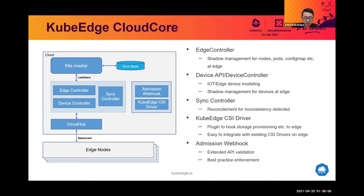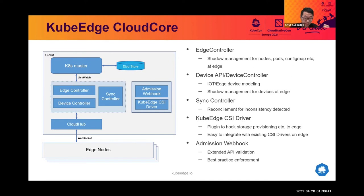The KubeEdge CSI driver is a plug-in to hook storage provisioning requests to the edge, making it easy to integrate with existing CSI drivers and backends running on edge. The admission webhooks are responsible for extended API validation and provide best practice enforcement, including automatic pod autonomy configuration.